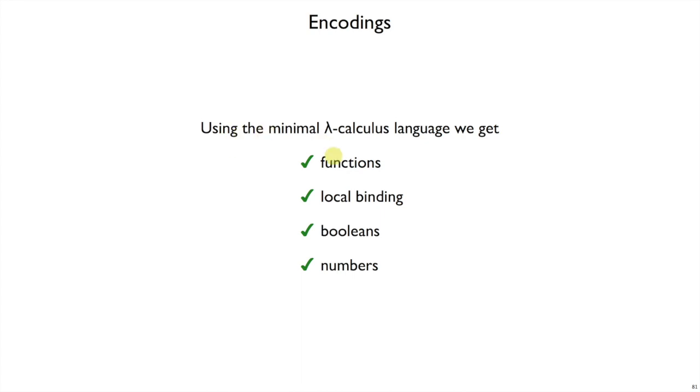Specifically, we get functions. Of course, we get single argument functions directly. That's the main thing that's built in. But we've seen how to encode multi-argument functions through encoding. We can get local bindings in the sense of let encoded as lambda. We can encode booleans with functions and get conditional dispatch out of it. And we can encode numbers.